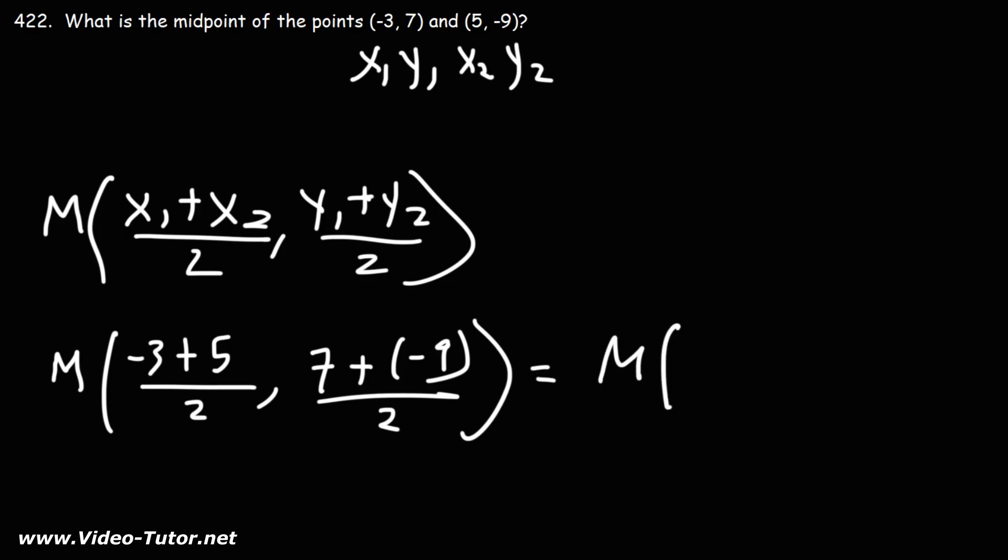So now let's simplify. Negative 3 plus 5 is 2, 2 divided by 2 is 1. 7 plus negative 9 is negative 2, negative 2 divided by 2 is negative 1.